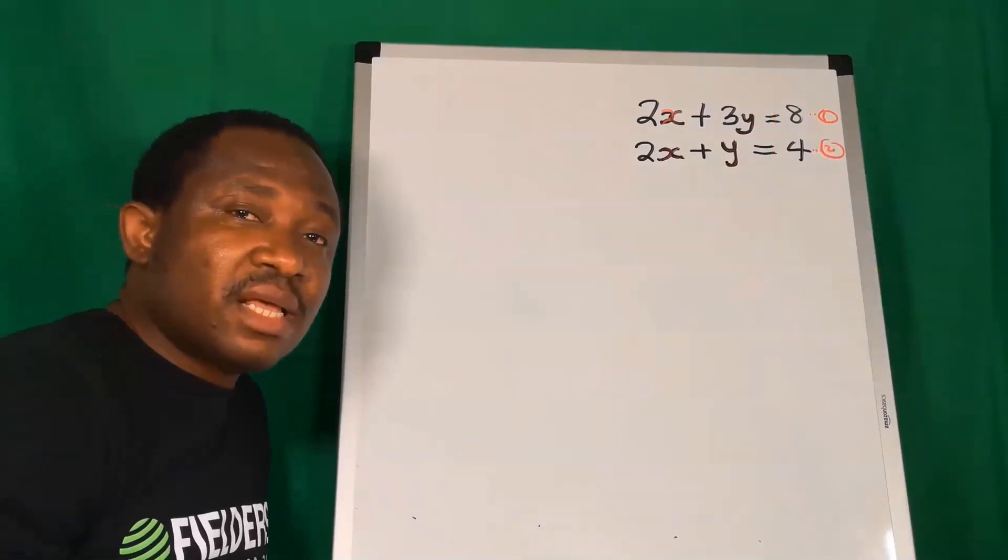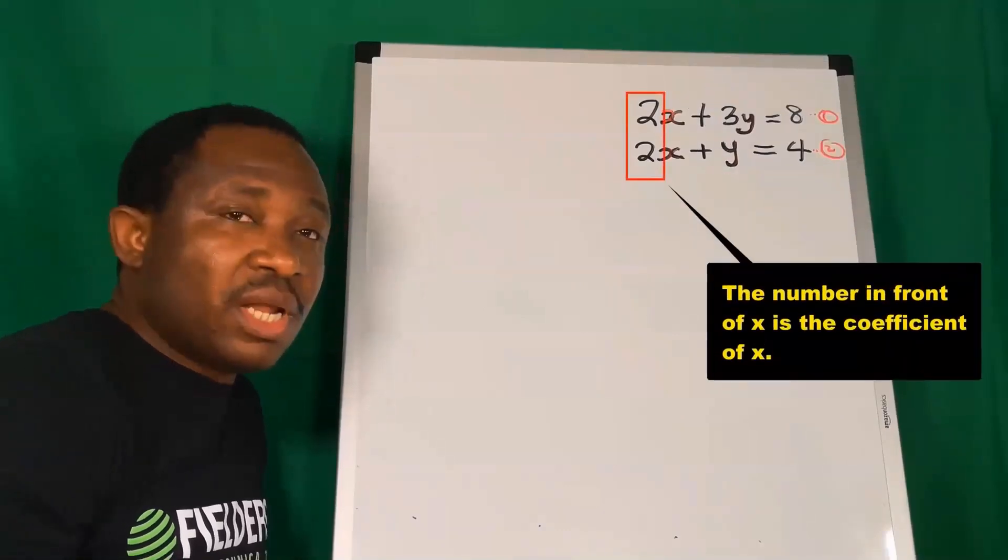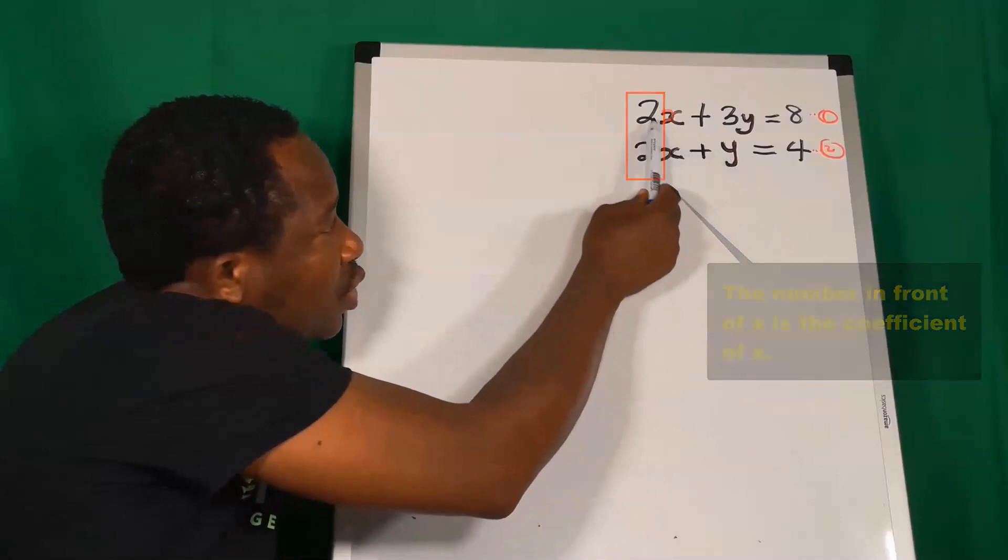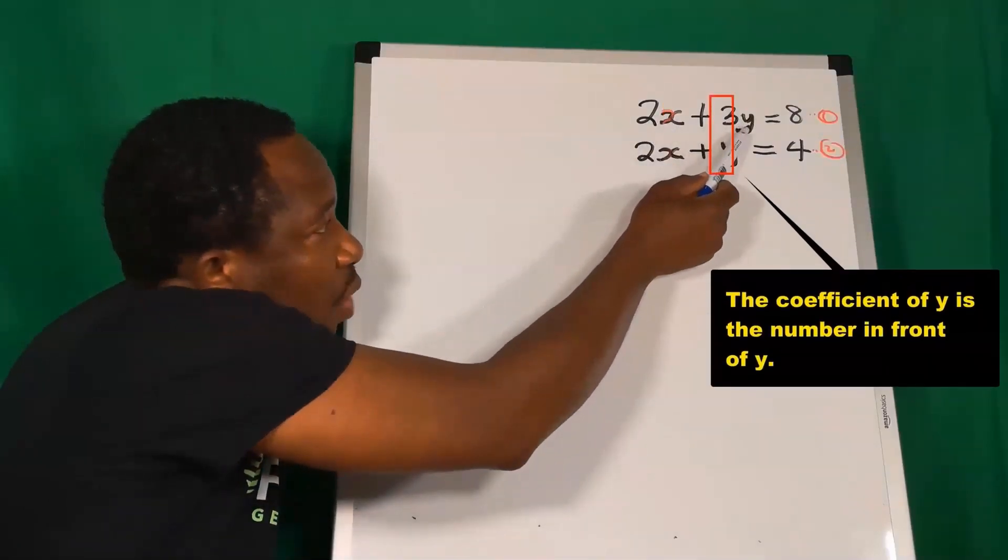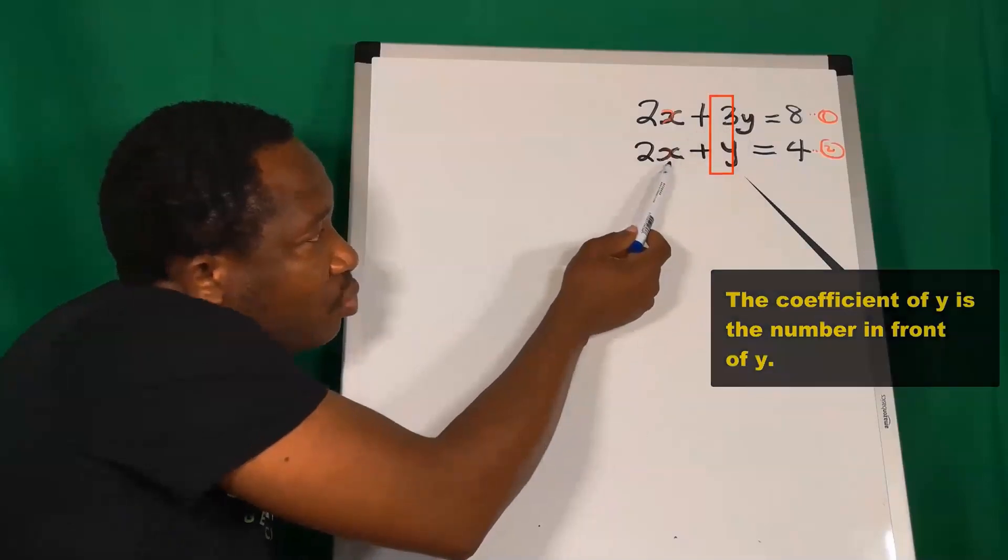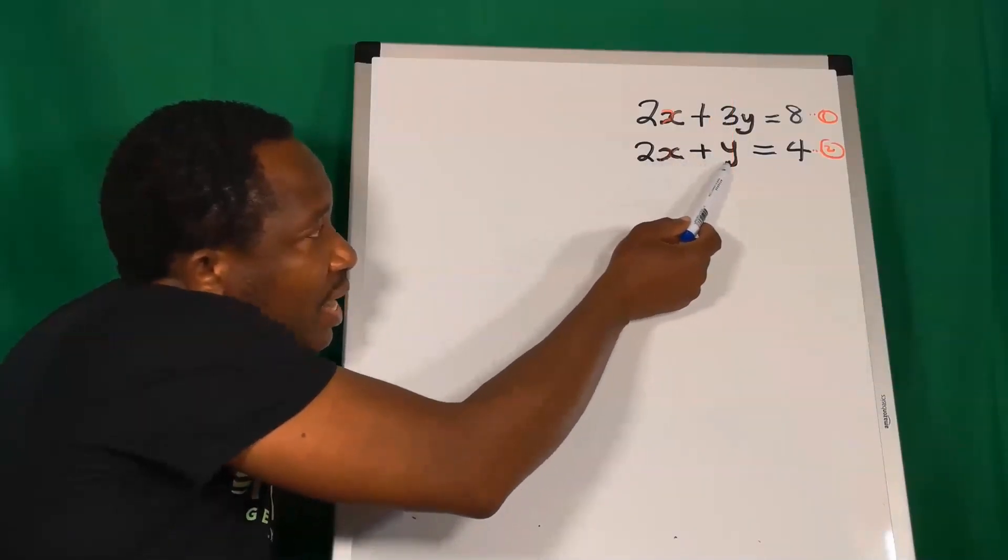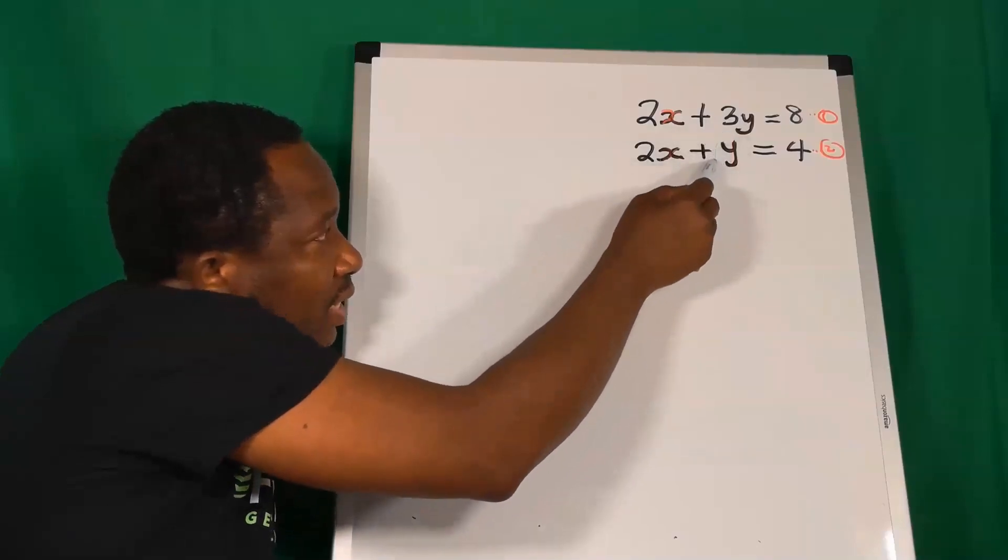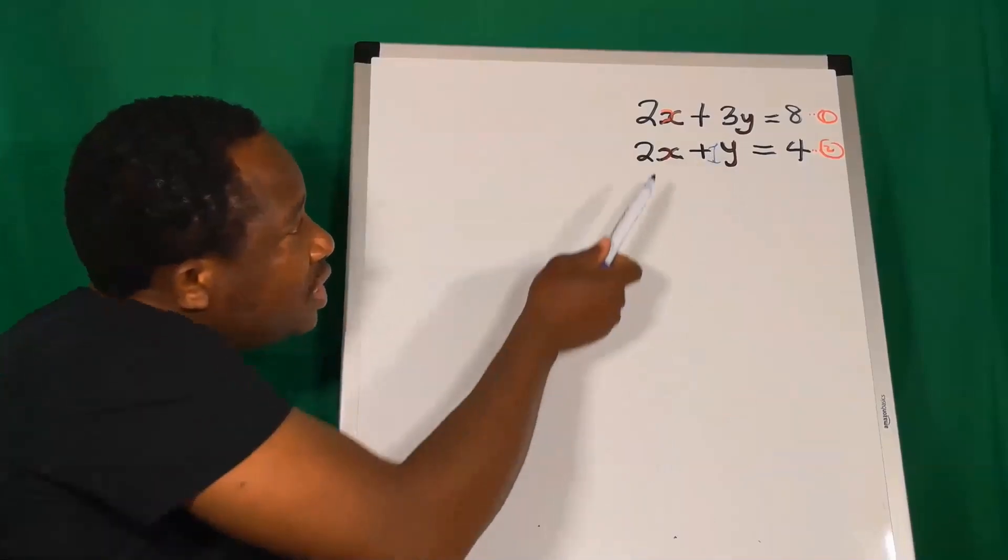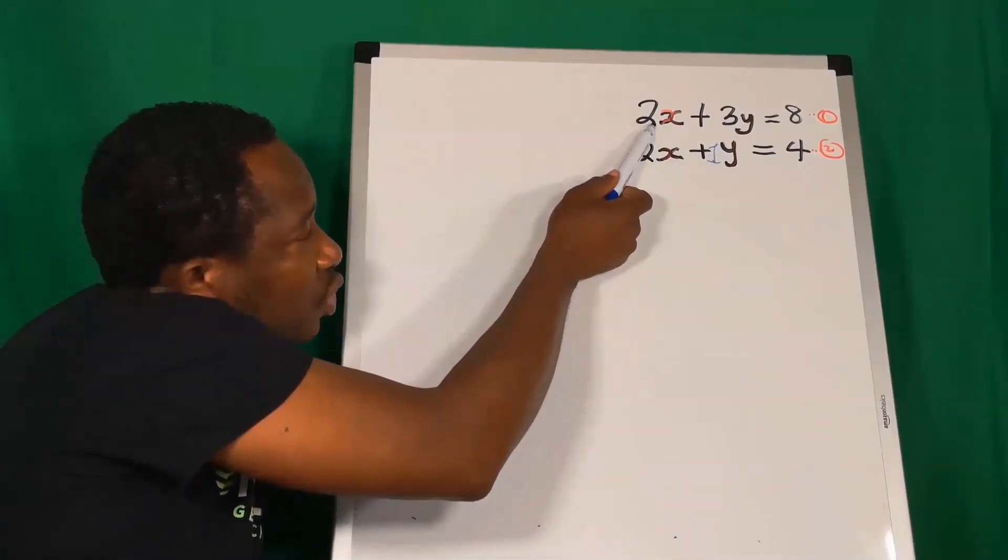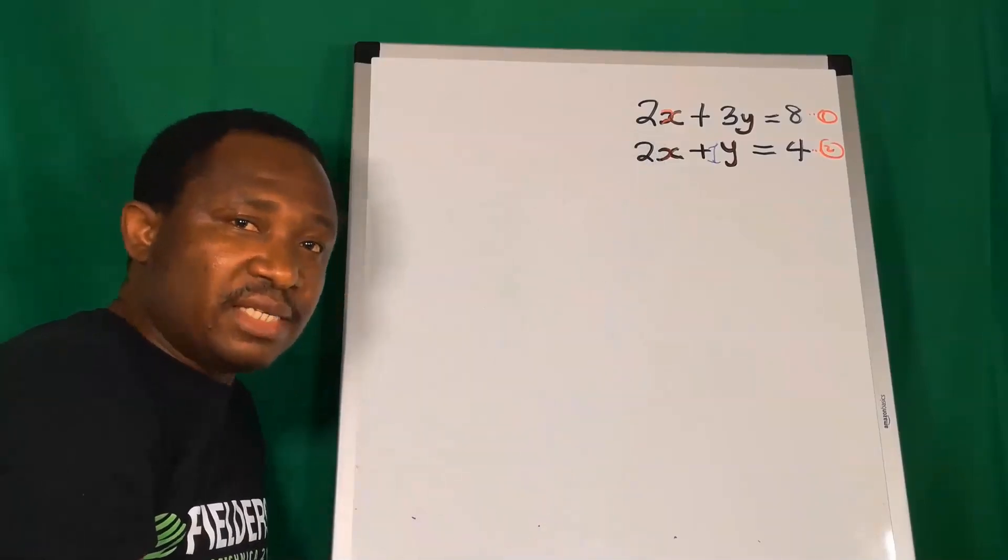Next, let's consider the coefficients of x and y. In equation 1, the coefficient of x is 2 and the coefficient of y is 3. For equation 2, the coefficient of x is 2 and the coefficient of y here is 1. Whenever it is 1, we don't usually write it. The coefficient of x for equation 1 and the coefficient of x for equation 2 are the same.